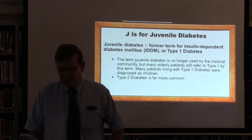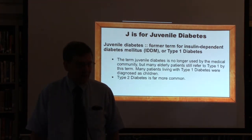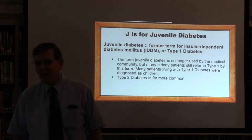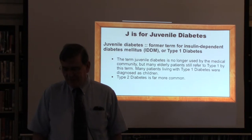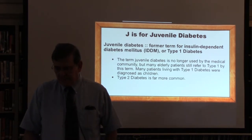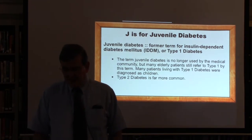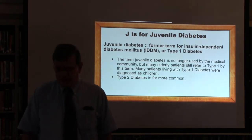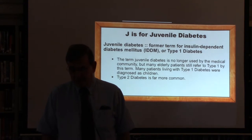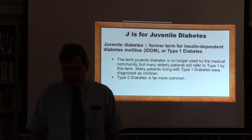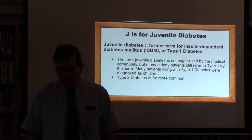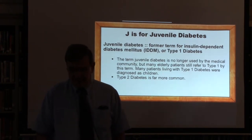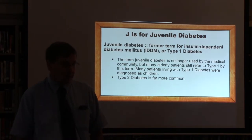J is for juvenile diabetes — a term we don't use much anymore. We call it type 1 diabetes now, but many elderly patients still refer to type 1 diabetes using this term. Many patients living with type 1 diabetes were diagnosed as children, and the term recognized that fact. Type 2 diabetes is more common, although huge strides are being made every year to address both types of diabetes.